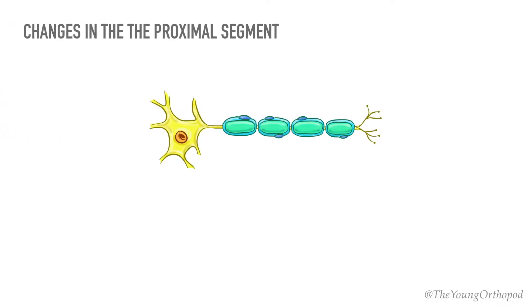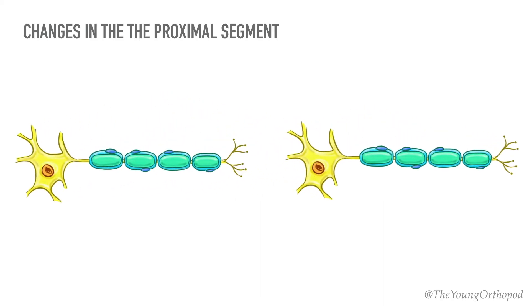Microscopically, the degree of damage sustained by the proximal segment and the neuronal cell body depends on the distance of the zone of injury from the cell body.